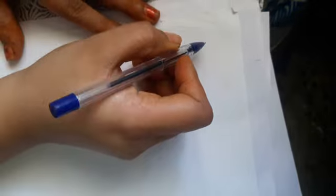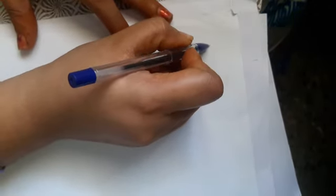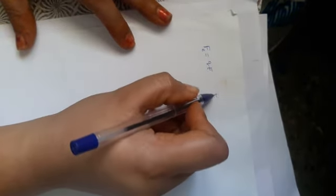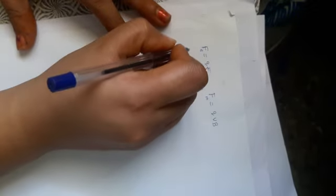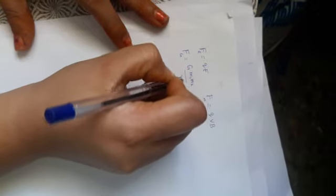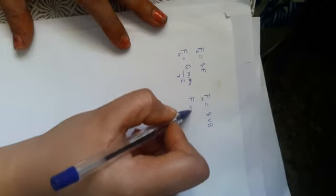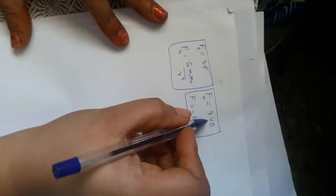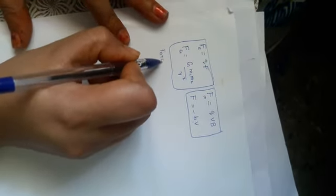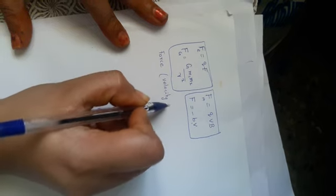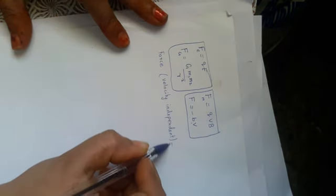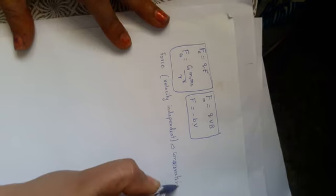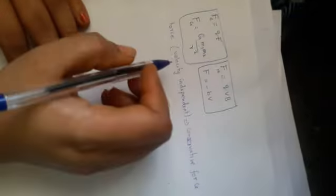From the force expression itself, we can tell whether it is a conservative force or not. For example, electrostatic force is q times E, magnetic force is q×v×B, gravitational force is Gm₁m₂/r², and frictional force is F = -bv. You can see that non-conservative forces are dependent on velocity, whereas conservative forces are independent of velocity.